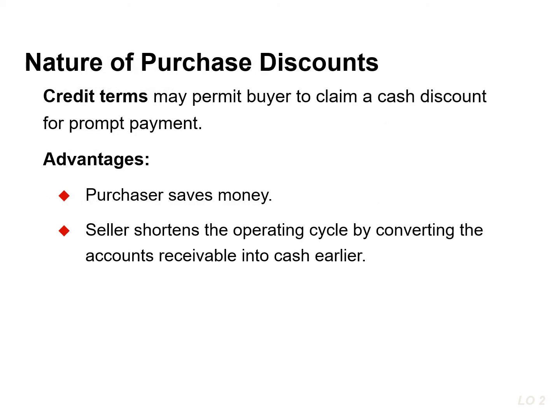The credit terms of a purchase on account may permit the buyer to claim a cash discount for prompt payment. The buyer calls this cash discount a purchase discount. This incentive offers advantages to both parties — the purchaser saves money and the seller is able to shorten the operating cycle by converting its accounts receivable into cash sooner. The credit terms specify the amount of the cash discount, the time period during which it is offered, and the length of time in which the purchaser is expected to pay the full invoice price.